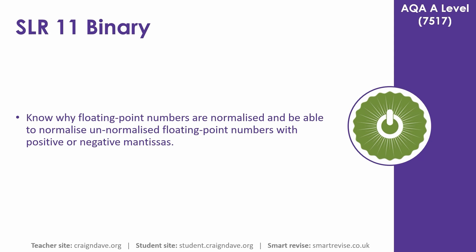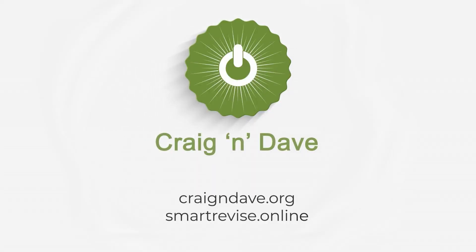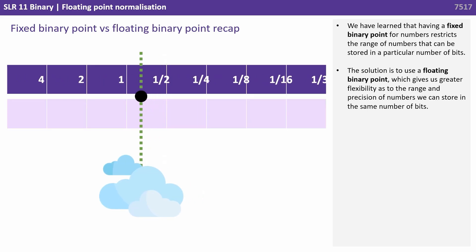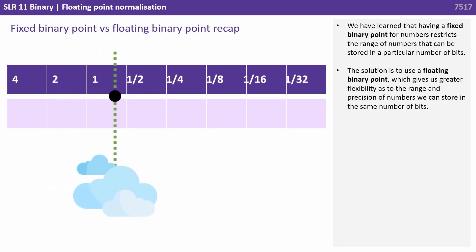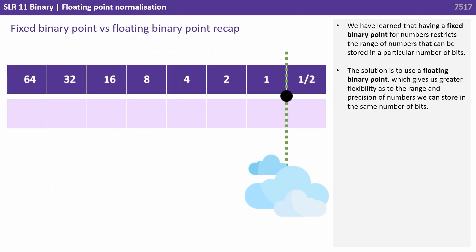In this video we take another look at floating point numbers and how they're normalised. We have learned that having a fixed binary point for numbers restricts the range of numbers that can be stored in a particular number of bits. The solution is to use a floating binary point which gives us greater flexibility as to the range and precision of numbers we can store in the same number of bits.